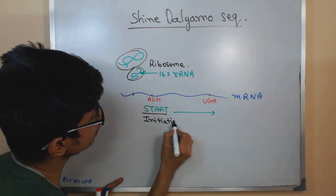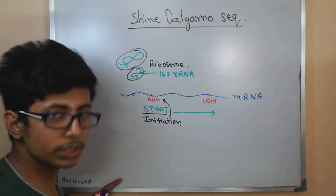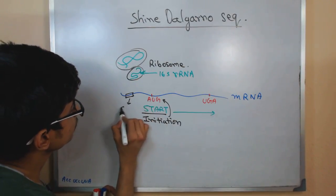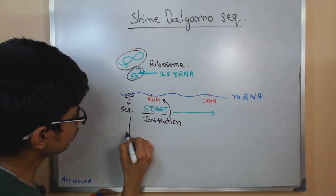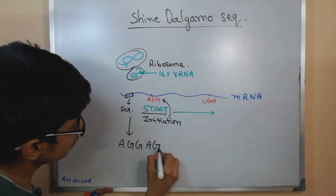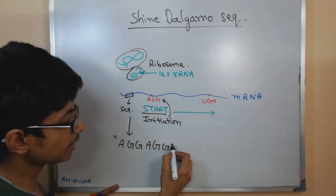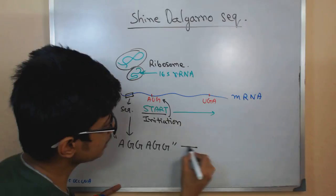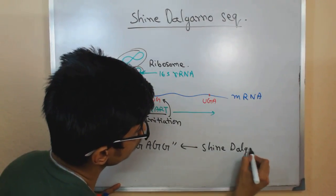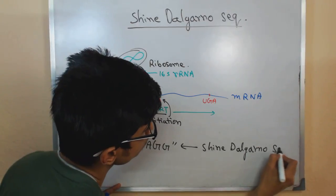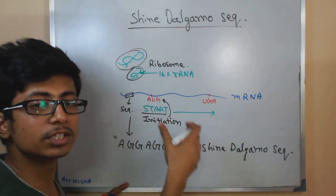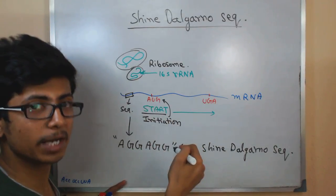If this is the initiation site, AUG, 8 base pair before there is a conserved sequence. If I zoom into this sequence, it will look like AGGAGG. This is the conserved sequence. This sequence is known as Shine-Dalgarno sequence, found 8 base pair prior to the start site or initiation site of protein synthesis in mRNA.